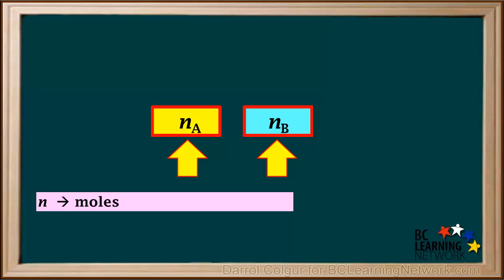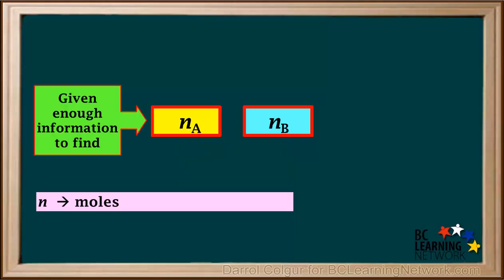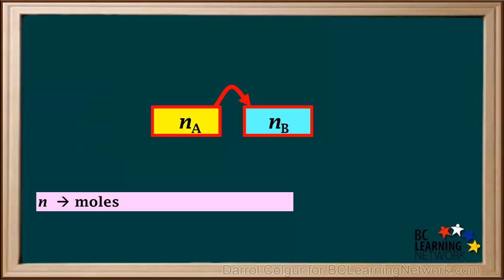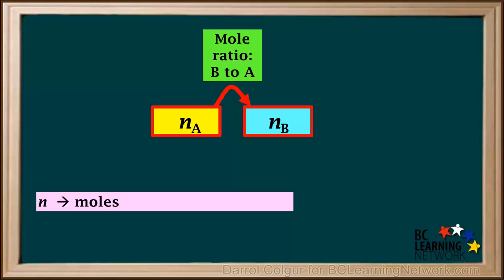In the center of all titration calculations are the moles of reactant A and the moles of reactant B. We represent number of moles in chemistry by the letter N. Reactant A represents the reactant that we're given enough information to find the number of moles of. To convert moles of A to moles of B, we always use the mole ratio, or coefficient ratio of B to A, in the balanced equation for the titration reaction.